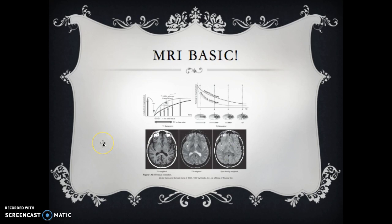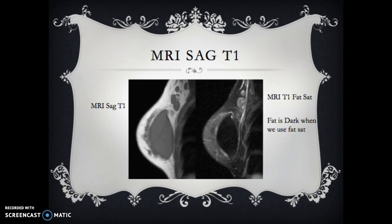If you look at your TR on your images, it'll be listed on there. It'll help guide you and tell you what scan sequence you're looking at. The other area that I want to focus in on is your fat sat.